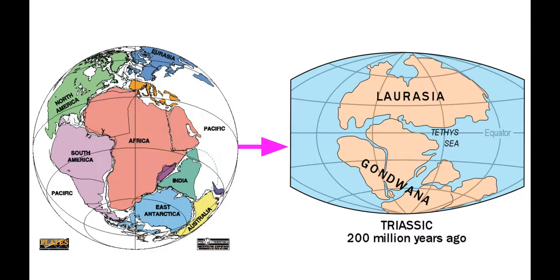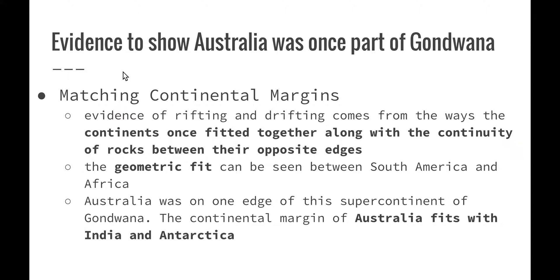Part of the evidence for continental drift theory comes from the study of Gondwana. The supercontinent of Gondwana existed approximately between 500 and 200 million years ago. It included Antarctica, South America, Africa, Madagascar, Australia, New Zealand, New Guinea, Arabia and the Indian subcontinent. We need to have a look at the evidence that shows Australia was once part of Gondwana.